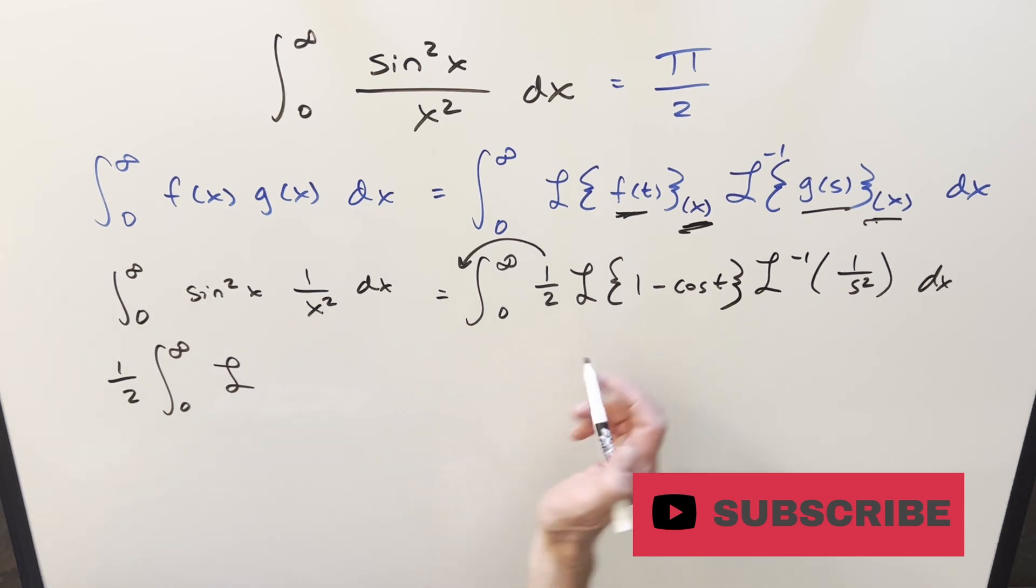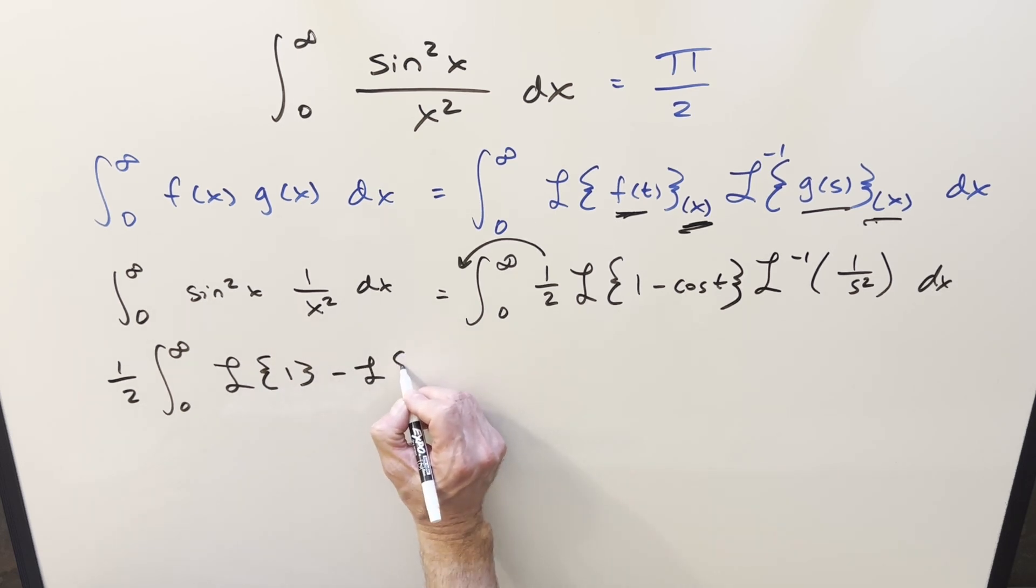And then now for the Laplace transform, and actually, let's just show how this works. So let's break this up, as we can break it on the minus sign, right as Laplace of 1 minus Laplace of cosine t.